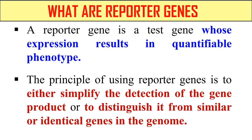The basic principle of using these reporter genes is that we incorporate these reporter genes into the vector. The position of the vector can then be detected because the expression of these genes will ultimately give some quantifiable phenotype to that particular cell which contains that vector. By visualizing their phenotype, we can clearly see the position of our vector. We can also use them to distinguish identical genes from the genome — if a particular gene is fused with the reporter gene, its position can be easily found by visualizing the phenotype of these reporter genes.